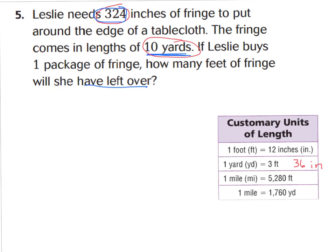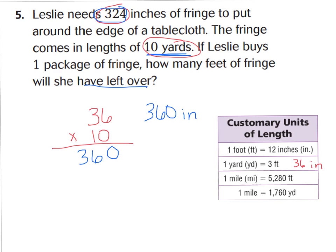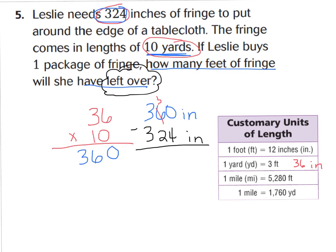We can figure out how many inches are in the whole pack: 36 times 10. Using the trick of dropping our zero down and multiplying 1 times 36, we get 360 inches. Now that we know there are 360 inches in 10 yards and she needs only 324 inches, the words 'left over' tell us to subtract. Let's subtract 324 from 360. Regroup from the tens: 10 ones minus 4 ones is 6 ones, 5 tens minus 2 tens is 3 tens. So she has 36 inches left over.